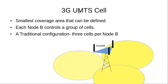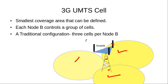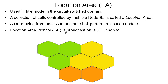First, we come to the 3G UMTS cell. The 3G UMTS cell is basically the smallest coverage area. For example, in this case we can see that we have a Node B and this Node B has three directional antennas. Each of these directional antennas is serving one cell. Each cell has its own cell ID. This is a traditional configuration where Node B is serving or controlling three cells.